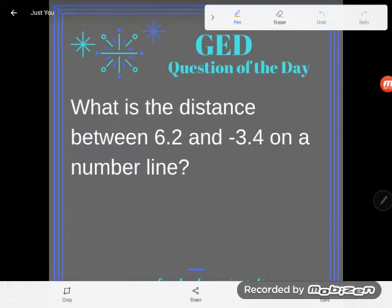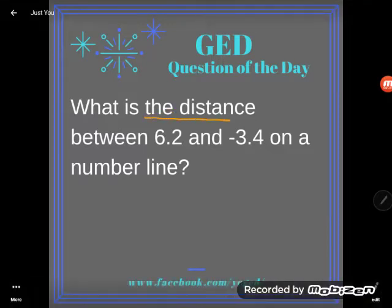Okay, so let's take a look. It says what is the distance between 6.2 and negative 3.4 on a number line.